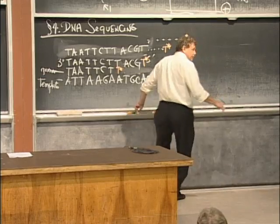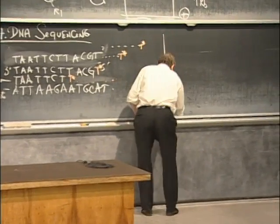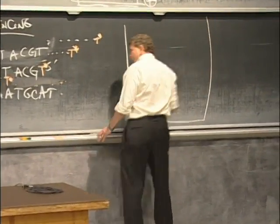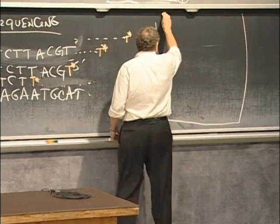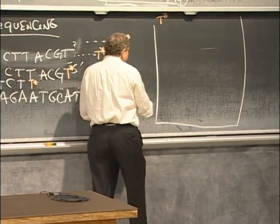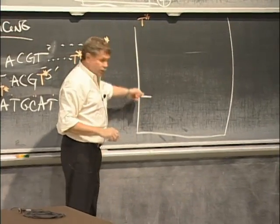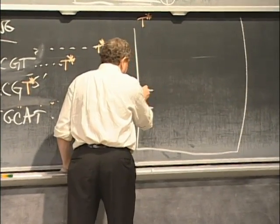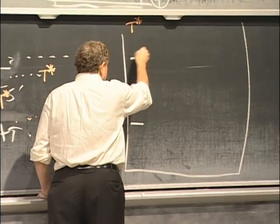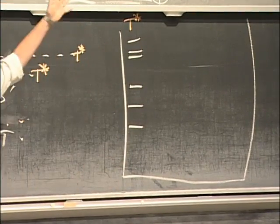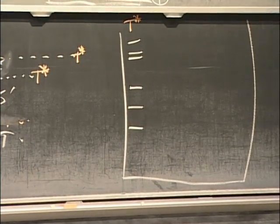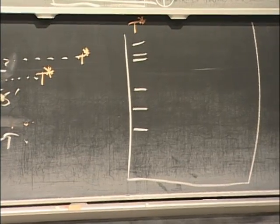So if I do that reaction, I'll call that the defective T's, I could see that there's some molecules that stop here at this very small size. Some stop here. Some stop here. Some stop there. Some stop there. And what have I just learned? The sizes, the lengths of the fragments that end in T.